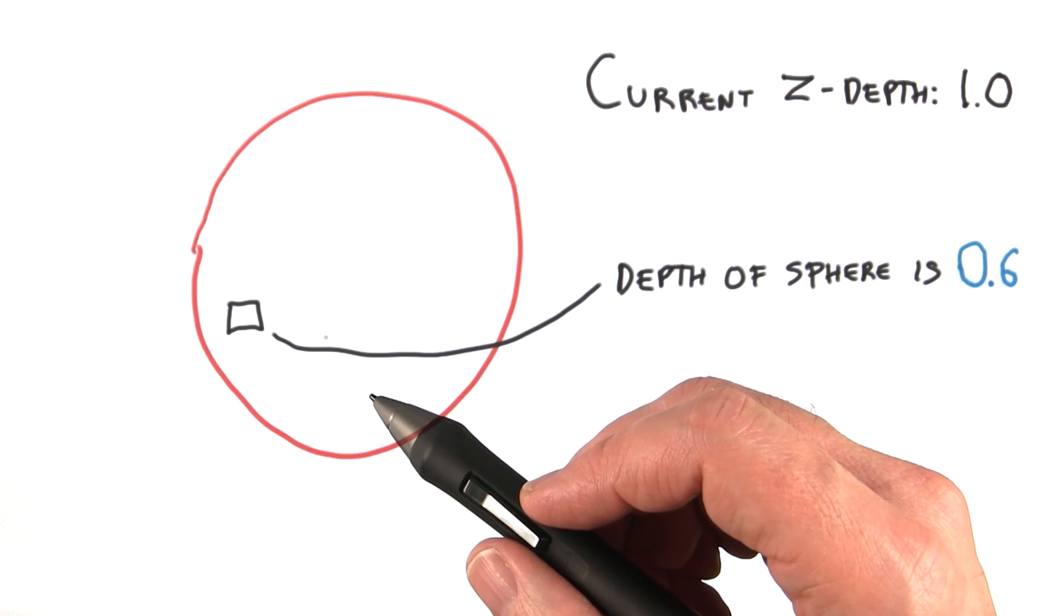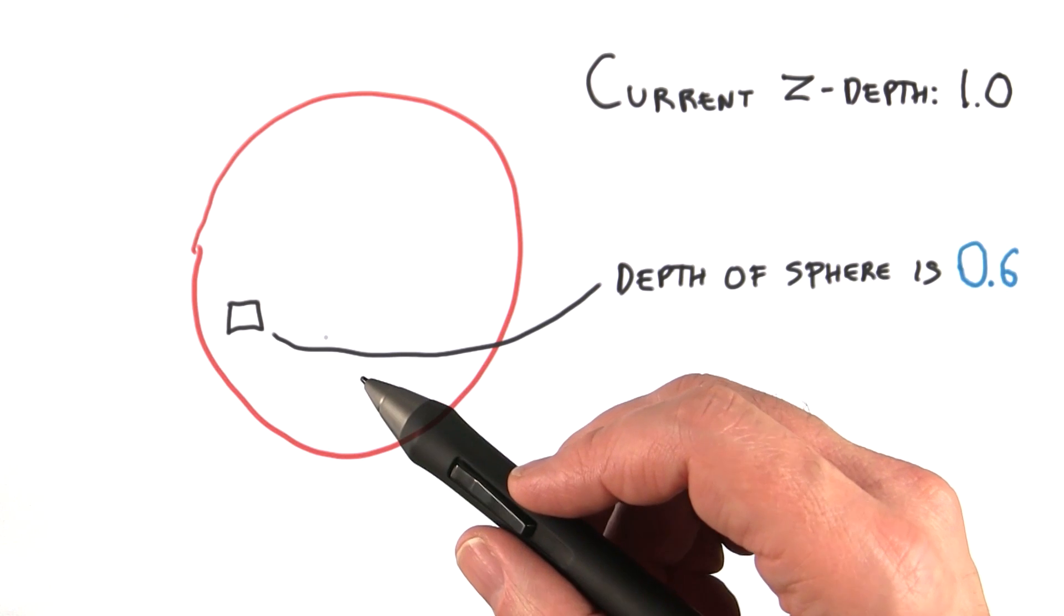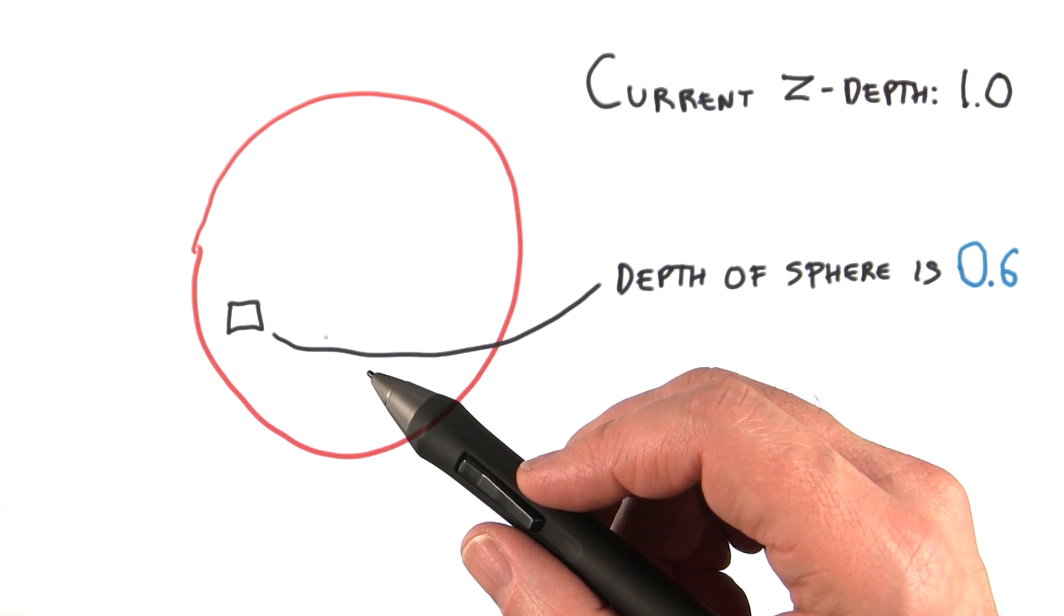When an object is rendered into an image, at each pixel, the distance from the object to the camera is used to compute its z-depth, a value from 0 to 1.